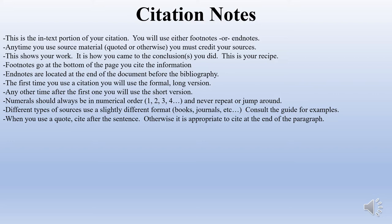A lot of students like to play a game I call the citation match game, where they create a list of sources at the back of their paper, number them, and then jump around — so your citations might be three, two, five, seven, one, six. That is technically incorrect. Every single time you cite you do a new citation, so it has to be one, two, three, four, five, six, seven all the way through to the end of your paper. Different types of sources use a slightly different format, so if you cite a book and a journal, the journal will be a little different because it has different information like magazine number, date, or pages. It's always important to consult one of the Chicago-Turabian guides for examples.